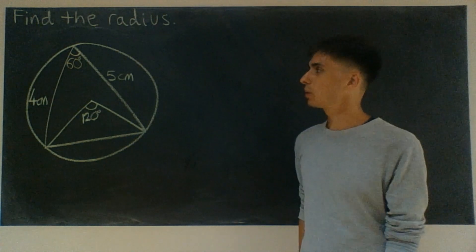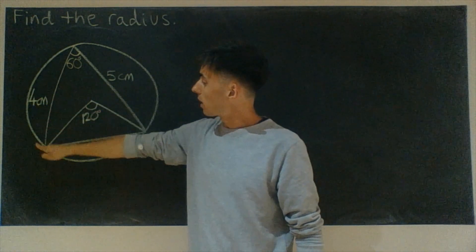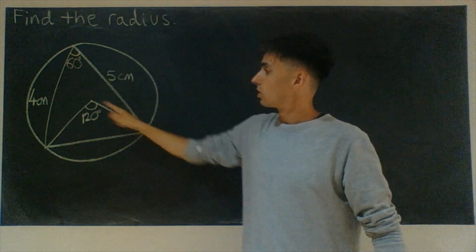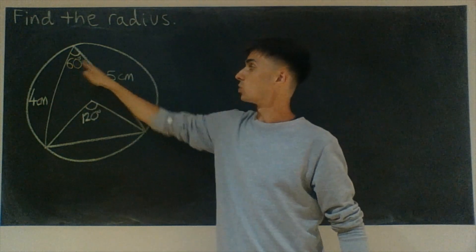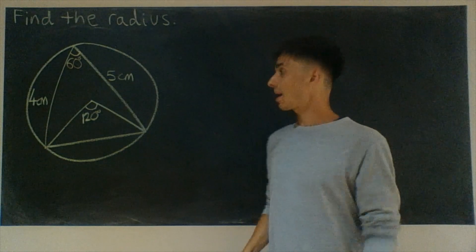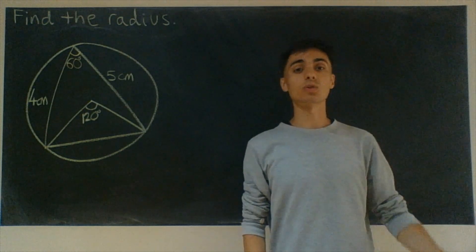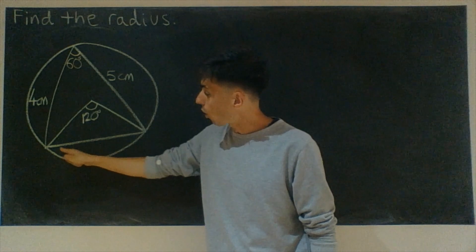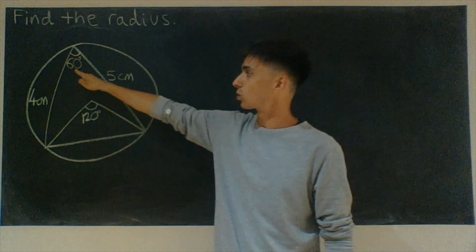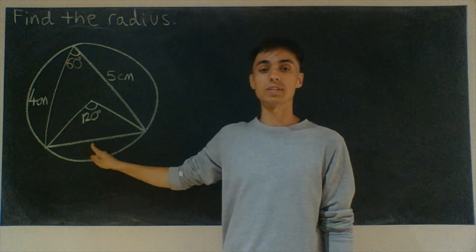Okay, continuing on then. Now if you look, we've got in the big triangle, side, angle, side. And when we have a setup like this, we can use the cosine rule to find the opposite side to that angle. So we can find the length of this chord.